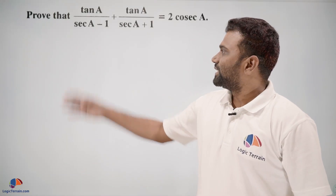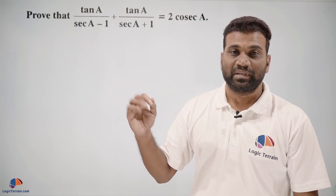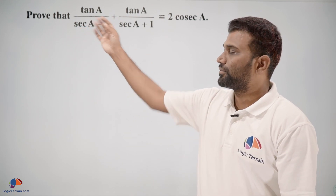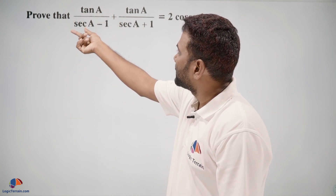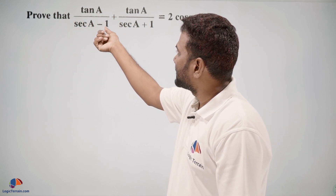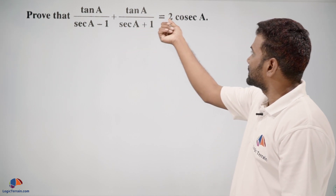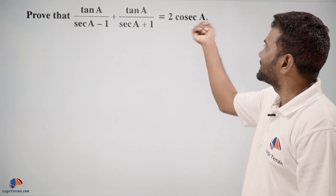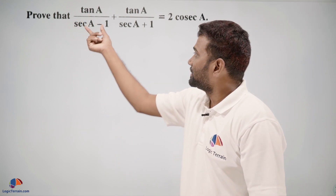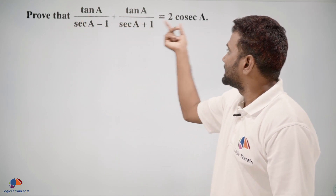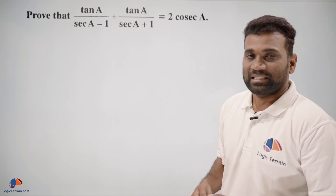Hello dear students, here is our question — very important because this is one of the previous year's board questions. Prove that tan A upon secant A minus 1, plus tan A upon secant A plus 1, is equal to 2 cosecant A. So we have to prove that this plus this equals this. For that, I'll take the LHS.